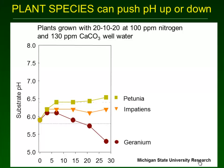Now let's talk about plant species. The plant species can push pH up or down. Research from Michigan State University shows three species — petunia, impatiens, and geranium — grown with the same 20-10-20 fertilizer at 100 ppm nitrogen and 130 ppm alkalinity in the well water. After 28 days the petunia had a much higher pH than the geranium. Petunia raises pH, geranium drops pH, and impatiens is somewhere in between.